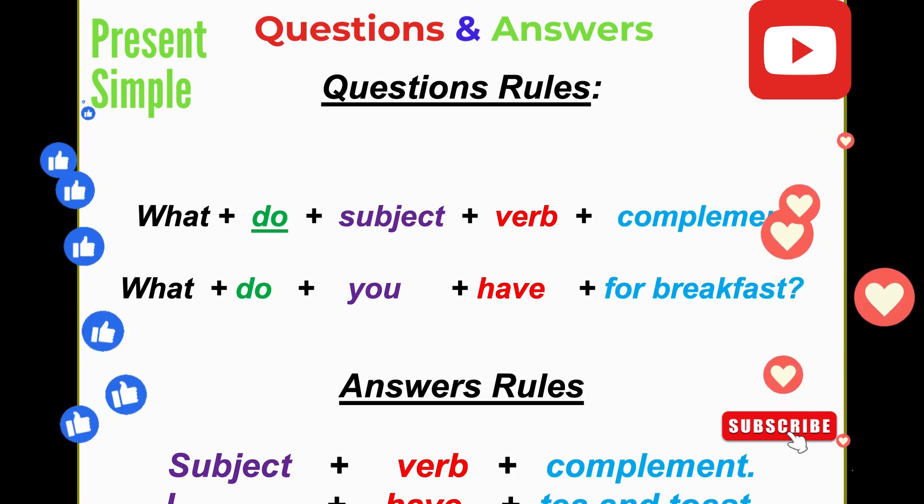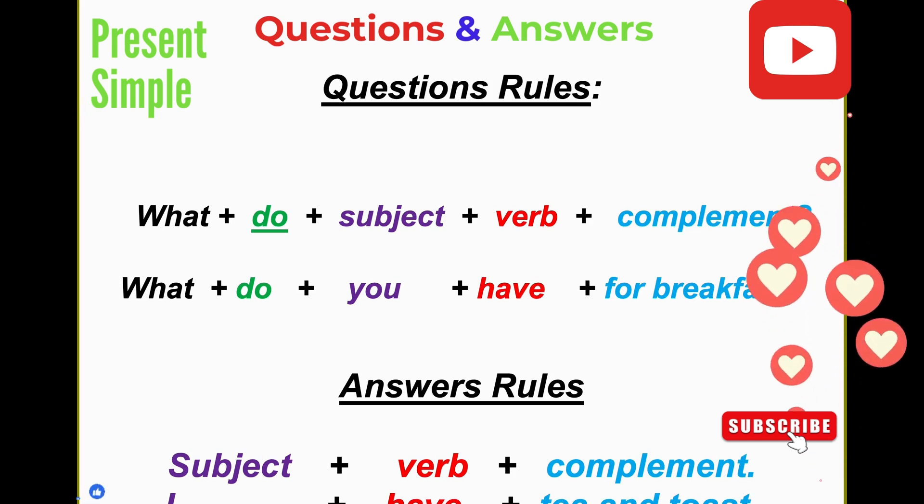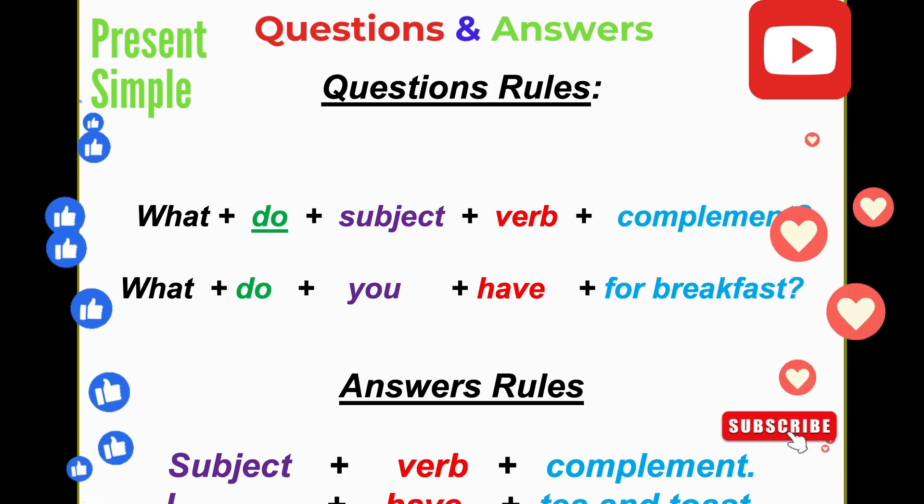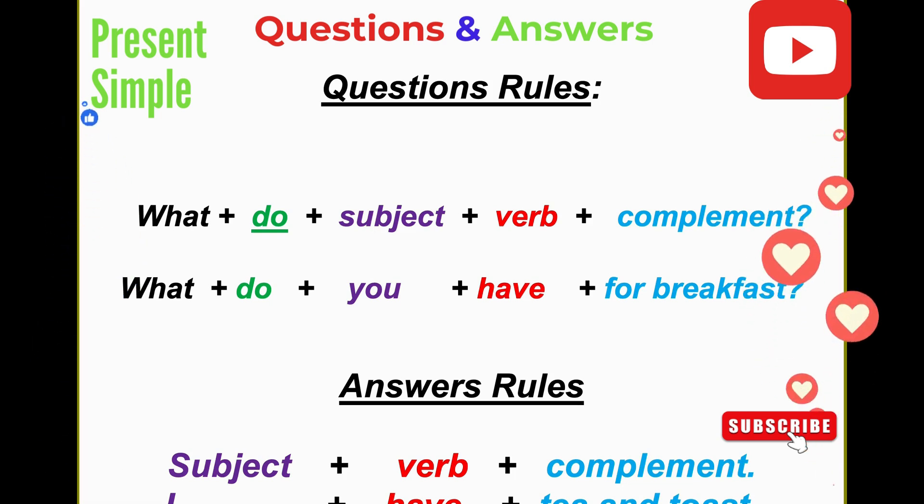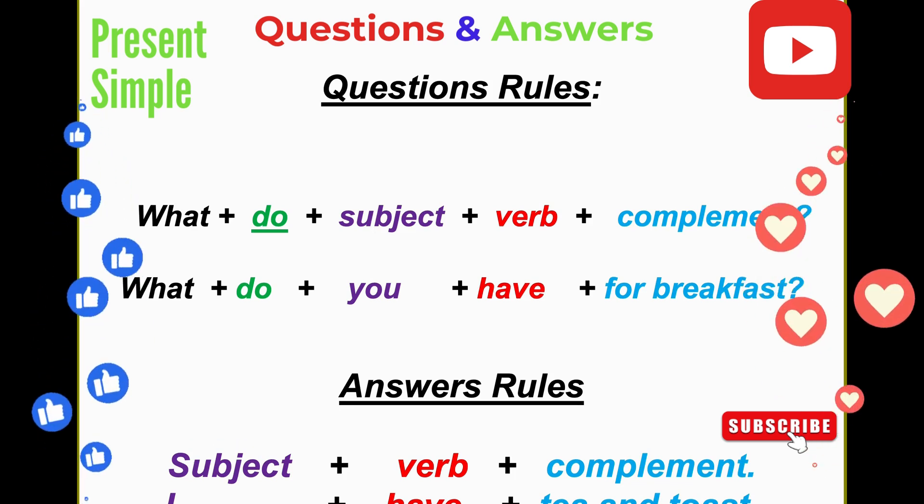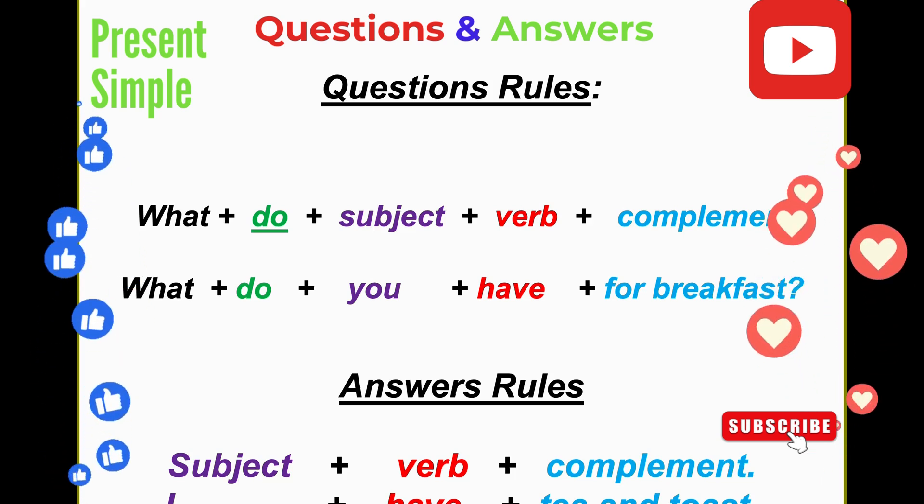This is the question. Let's see the answer rules. We always start with subject (I, you, he, she, it, we, they) and the verb have plus complement. Subject, verb, complement - for example, I have tea and toast. We are going to practice these rules in real sentences.